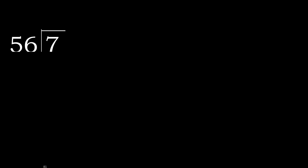7 divided by 56. 7 is less than 56, therefore always complete with 0. Here, 0 point.